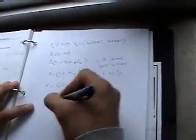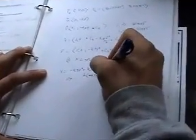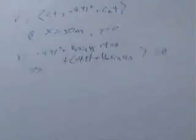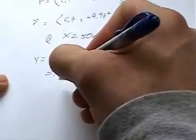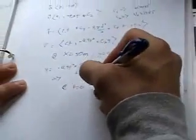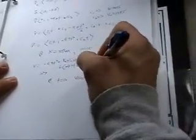X equals 50 meters. Y equals zero. Alright. Let's calculate this out real quick. Y equals negative 4.9 T squared plus V-knot sine 45 times T equals zero. Alright. And that's going to give us T times negative 4.9 T plus V-knot sine 45, which equals zero. T equals zero or V-knot over sine 45.